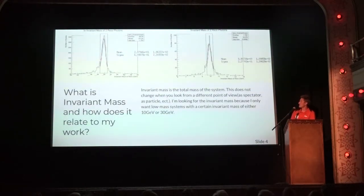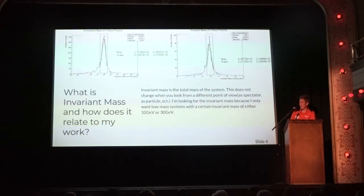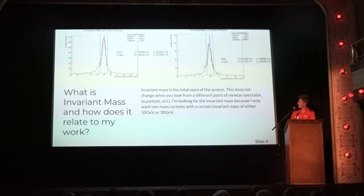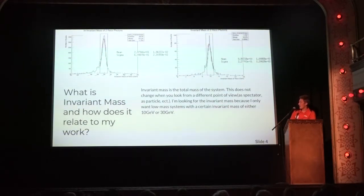Invariant mass is the mass of the system and it doesn't change no matter what perspective you're looking at — whether you're someone watching through a telescope or whether you're a particle moving at the speed of light. We were looking at 10 to 30 GeV diphoton final states.